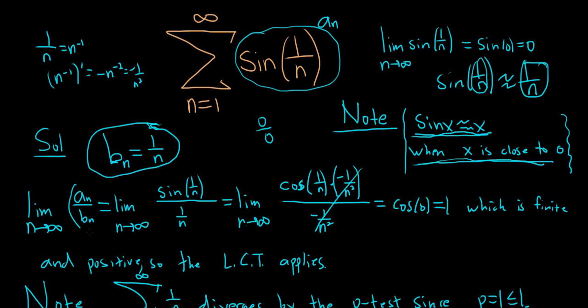And remember, when this limit exists, this limit a sub n over b sub n, when you get a positive number, that basically means that a sub n and b sub n, they grow at the same rate. And so because they grow at the same rate, the sums of the A's and the B's should also behave the same. If one converges, the other should converge. If one diverges, the other should also diverge. And that is the intuitive thing here. That is the most important thing to get from the limit comparison test. That's why it works.